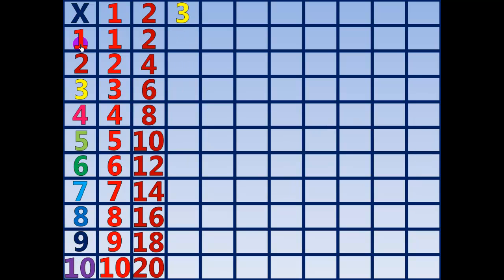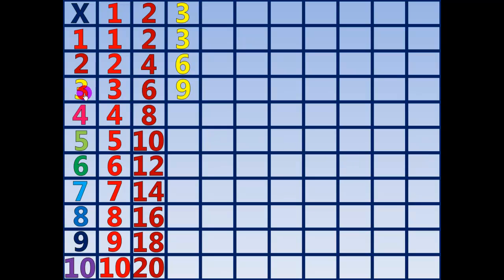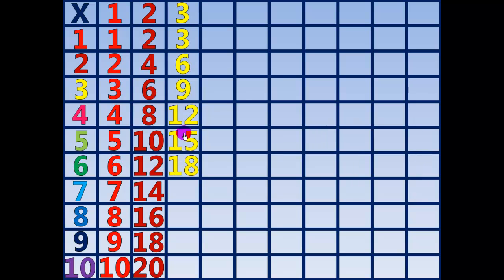3 times 1 equals 3. 3 times 2 equals 6. 3 times 3 equals 9. 3 times 4 equals 12. 3 times 5 equals 15. 3 times 6 equals 18. 3 times 7 equals 21. 3 times 8 equals 24. 3 times 9 equals 27. 3 times 10 equals 30.